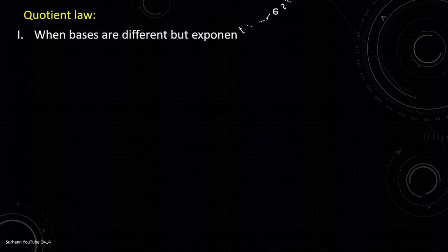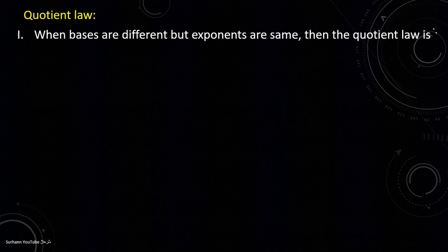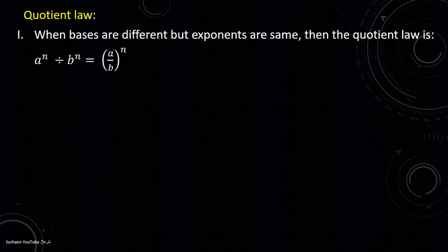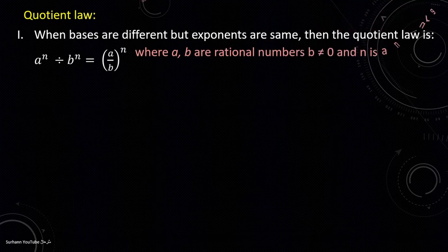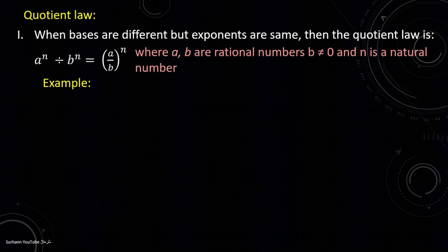In the name of Allah, the most beneficial and the most merciful. Before going to exercise 4.3, let us understand some exponent laws. Number one is the quotient law. It says that when bases are different but exponents are the same, suppose a is a base and n is the exponent, divided by another base b with exponent n. The answer will simply be a divided by b with the same exponent, where a and b are rational numbers, b is not equal to zero, and n is a natural number.